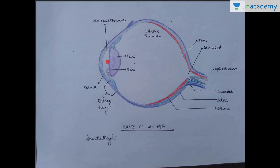Just behind the cornea, we have the aqueous humor chamber. Behind the aqueous humor is the lens, so the aqueous humor is bounded by the lens and the cornea. The ciliary body is basically an extension of the choroid — the choroid gives rise to the ciliary body and the filaments that hold the lens in position. So what gives rise to the ciliary body is the choroid layer of the eye.